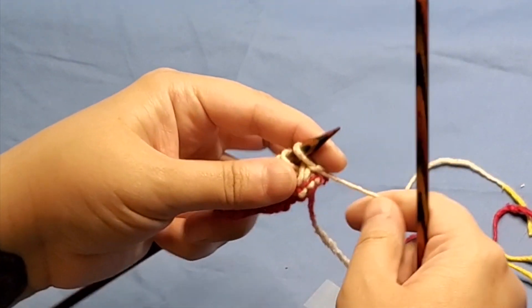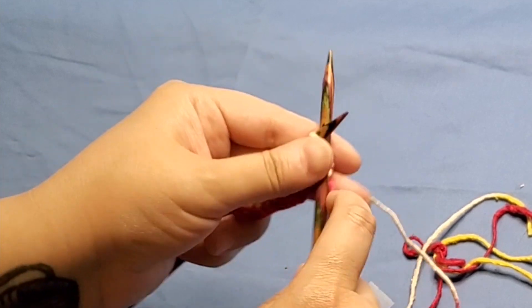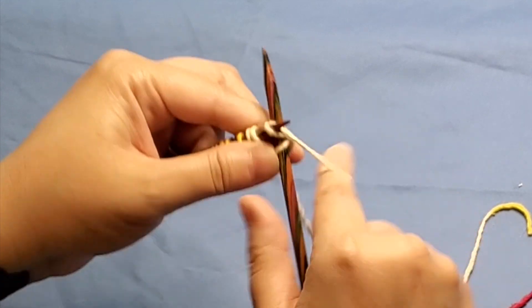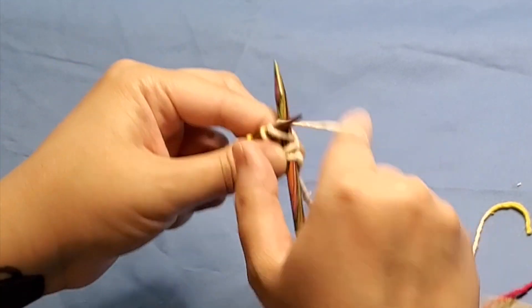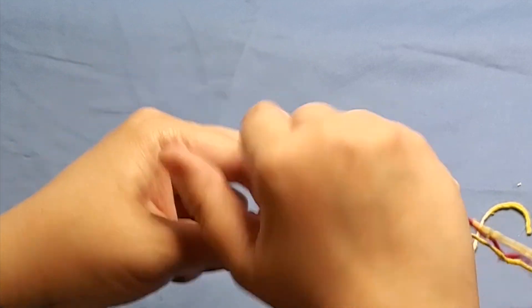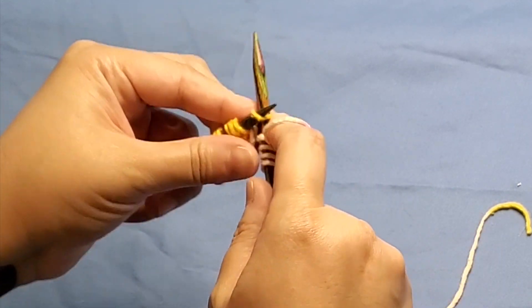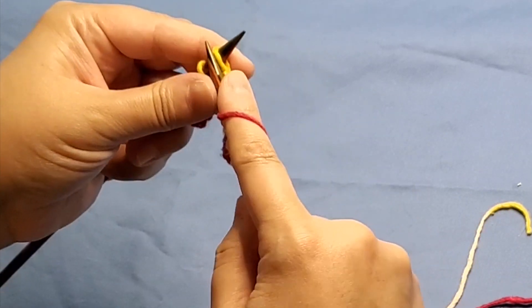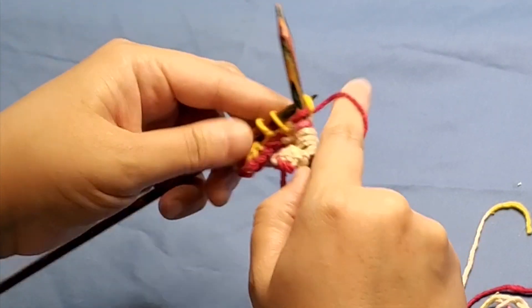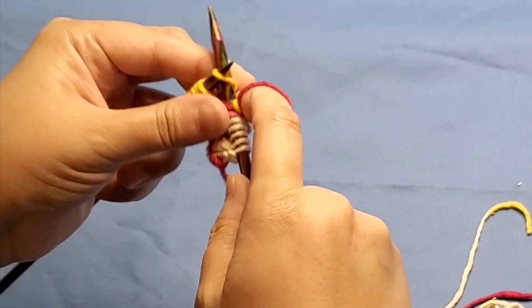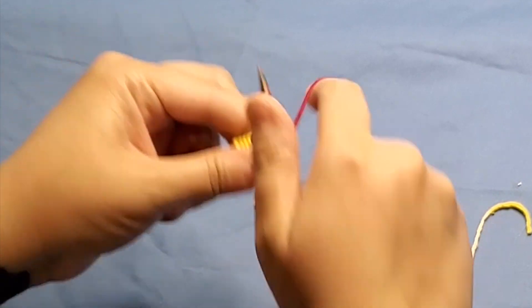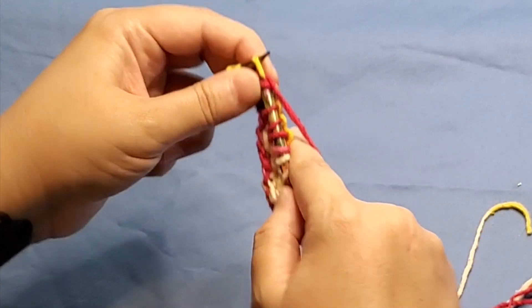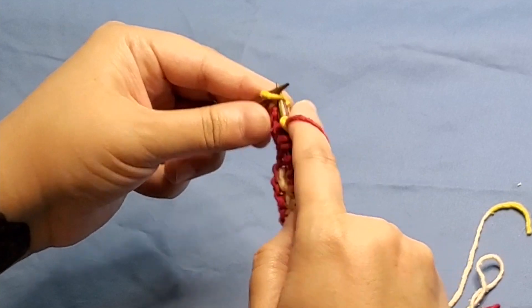The next row is a knit stitch all the way across. Like I said, all the action happens on the wrong side of this pattern. Just going to knit these, be sure to knit them fairly loosely. And then on the fourth row, we're actually going to be staggering where the daisy stitches are. So you end up with more of a diagonal row of daisy stitches.